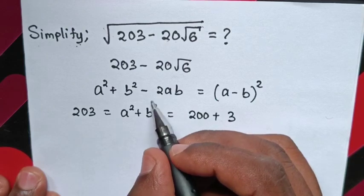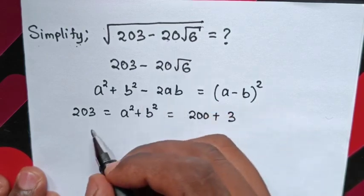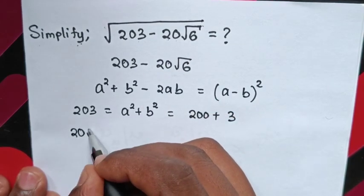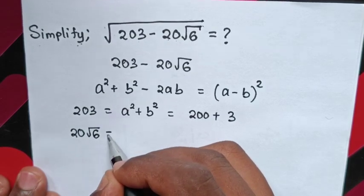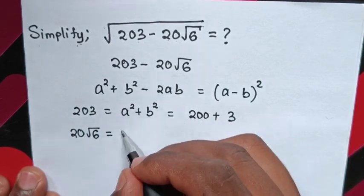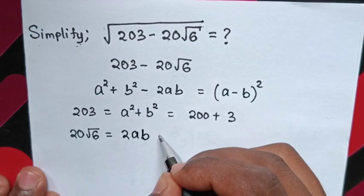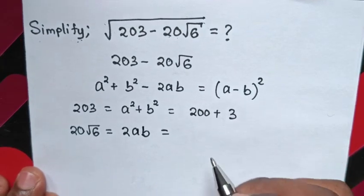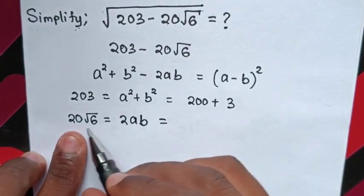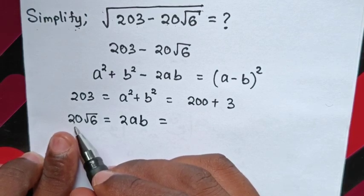And again, we will compare 20 square root of 6 to 2ab. When we divide by 2, it will be 10 square root of 6.